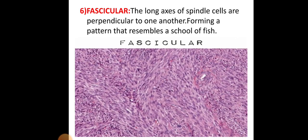The fascicular pattern is where the long axis of spindle cells are perpendicular to one another, forming a pattern that resembles a school of fish.